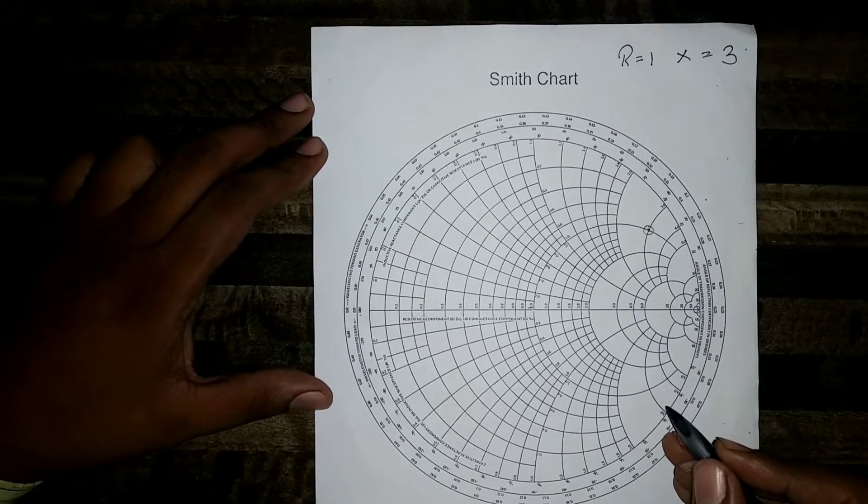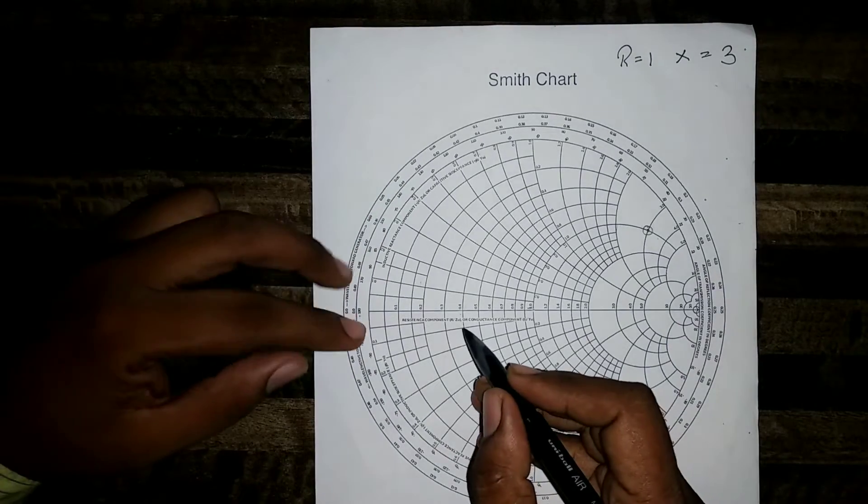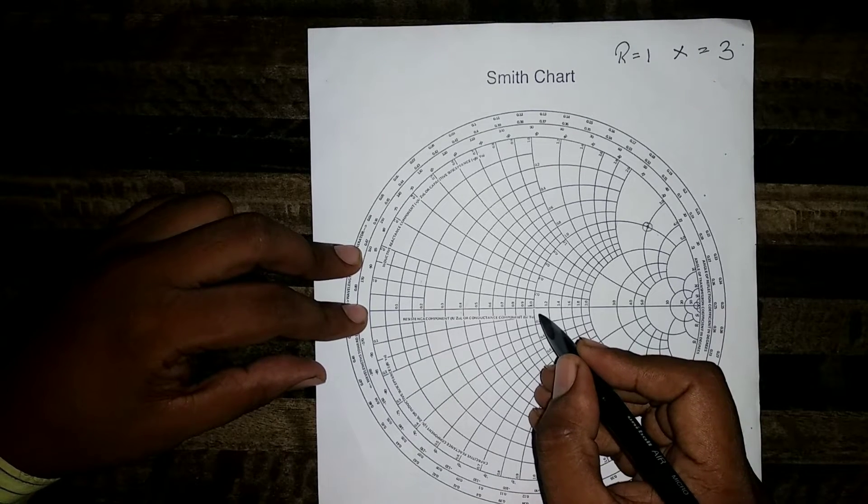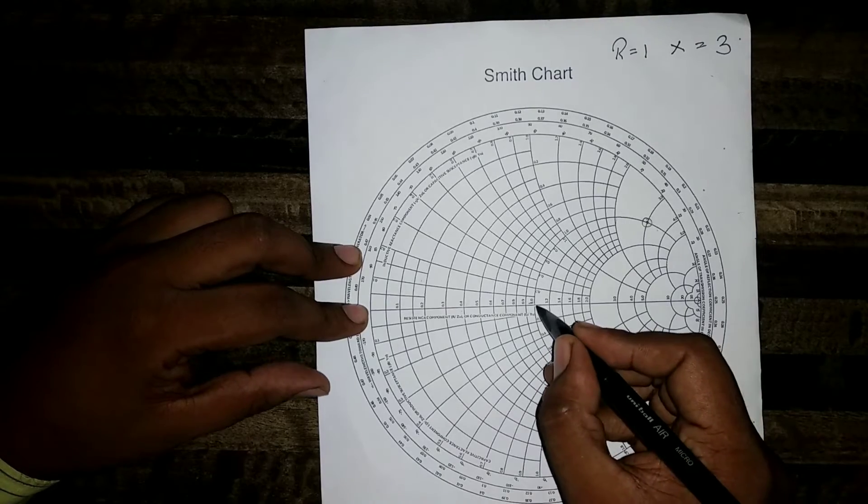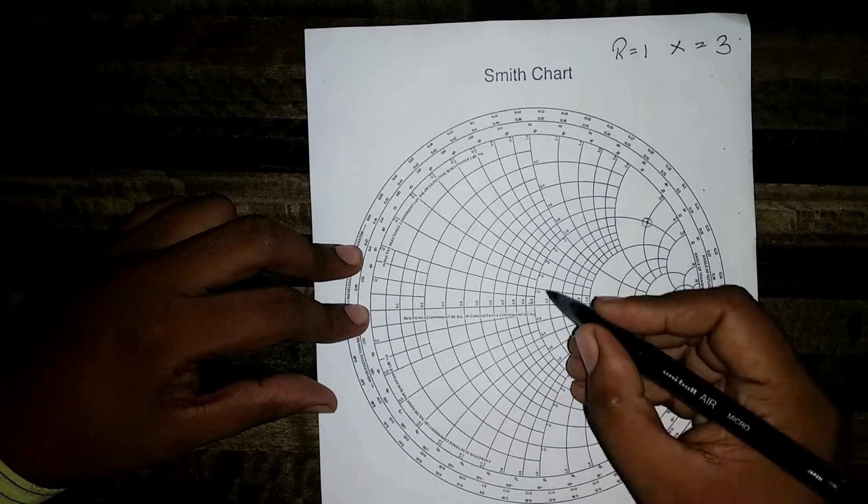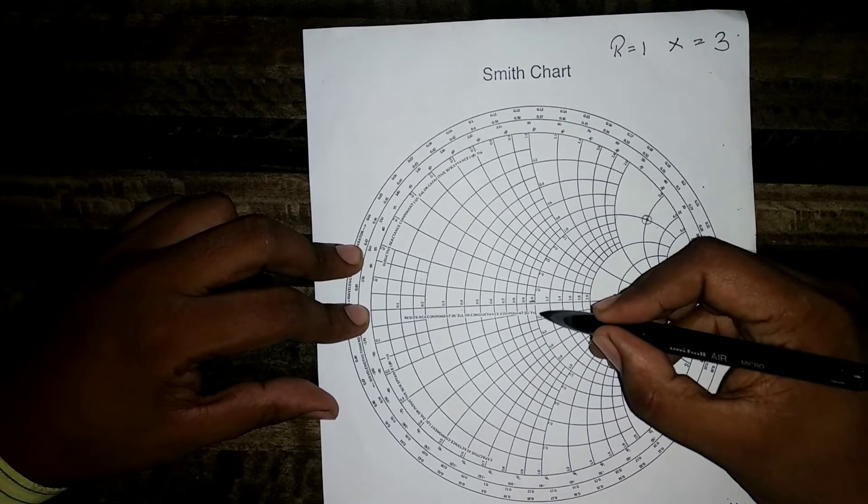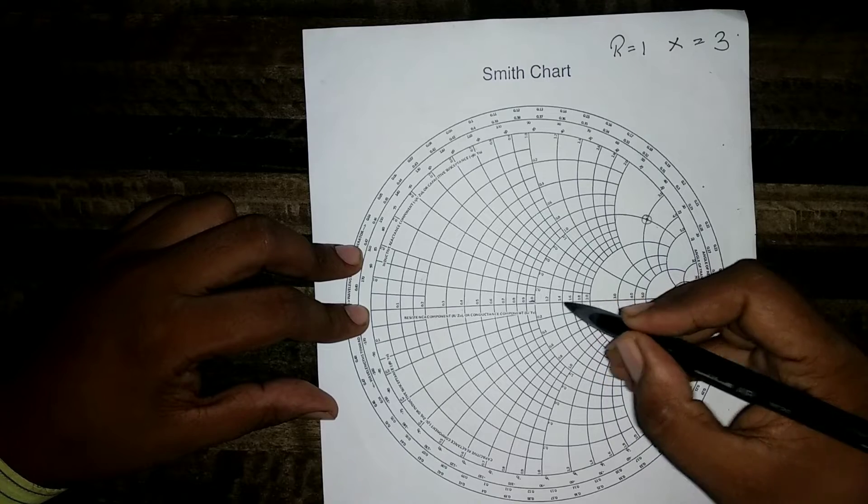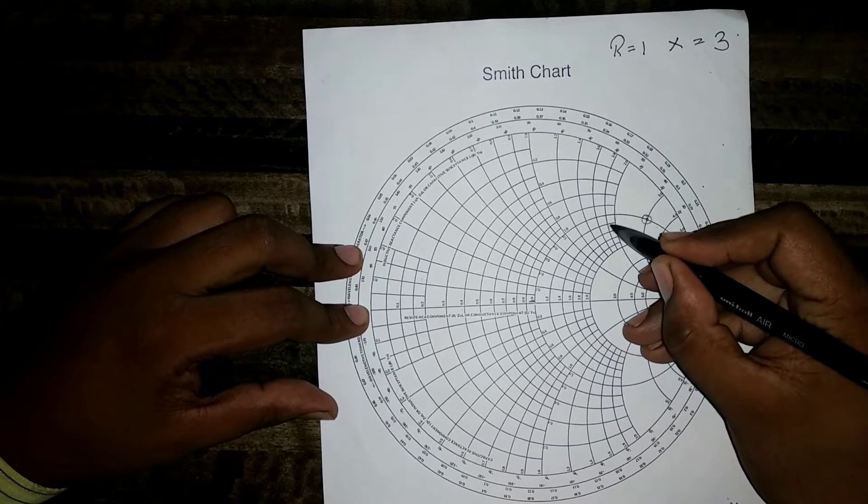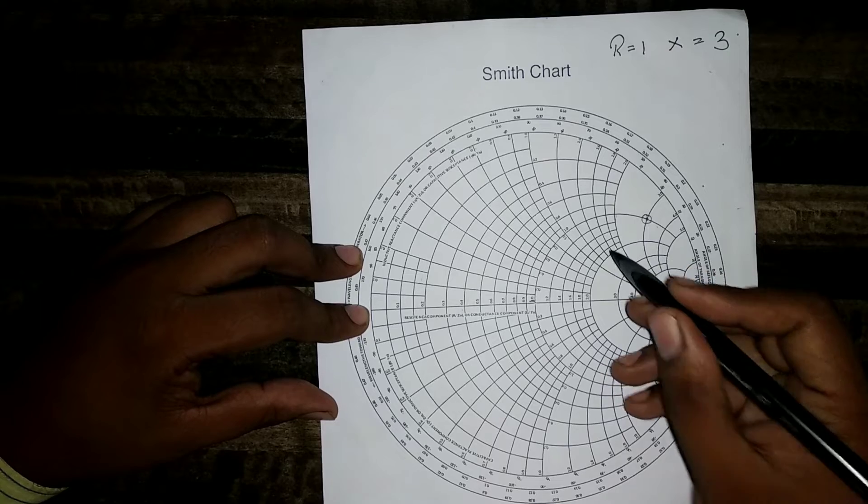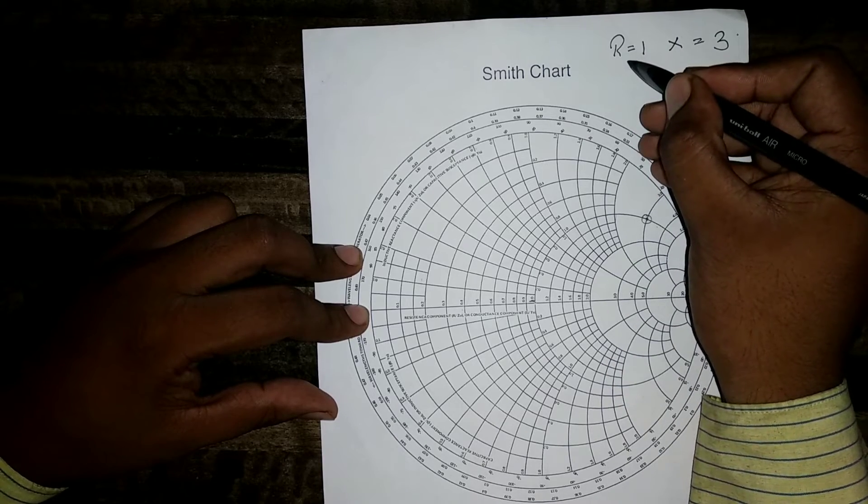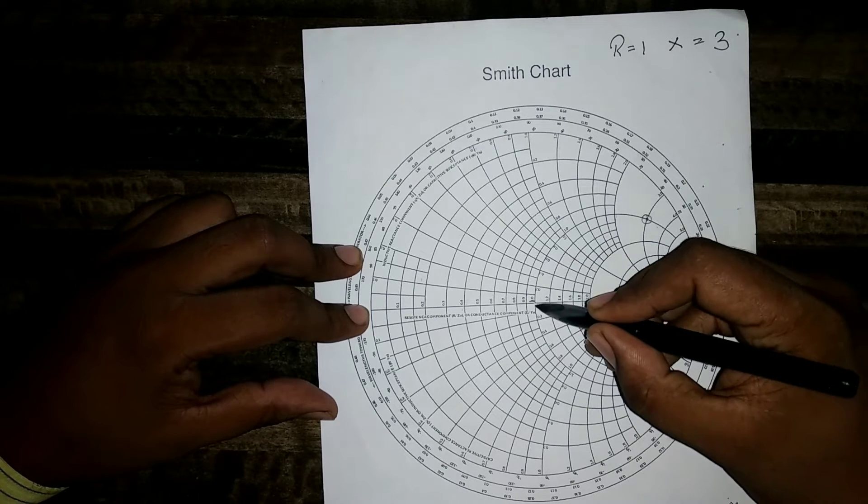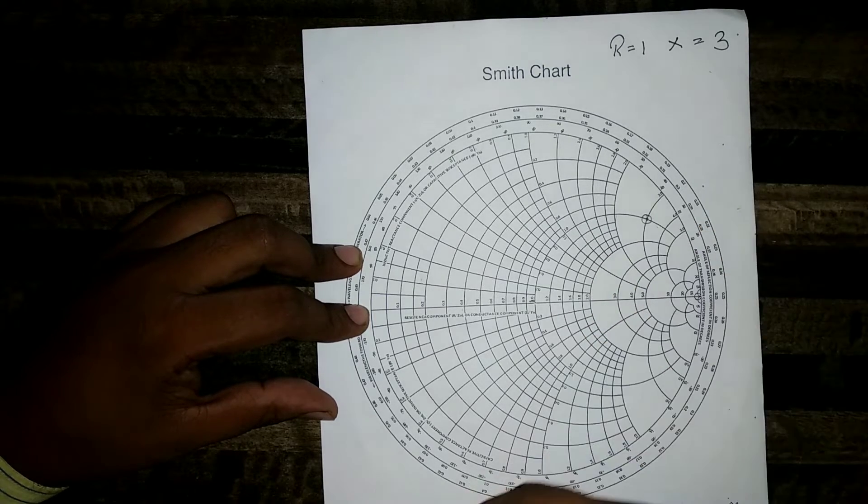R equal to 1 and X equal to 3. You can see at the center line of the circle a scale is given. At the center line of the circle a scale is given. This scale gives the values of this R circles. This is 1. It means this circle is R equal to 1 circle. This is 1.2. It means this circle is R equal to 1.2 circle. R equal to 1.4. Now I have to find I have to get my point on R equal to 1. Now this circle is R equal to 1. Therefore, I will be getting my point on this R equal to 1 circle.